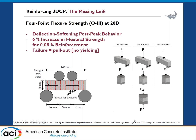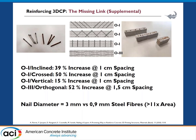More detail on this work will be presented at the Digital Concrete conference held online. As supplemental work, Arno Pero used a similar concept but with nails — both normal and rusted — included at 45 degrees and cross-linked. In his case he achieved a 52% increase in flexural strength in the same O3 direction. This is related to the larger diameter of the steel and likely improved bond due to the surface roughness from rusting.